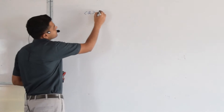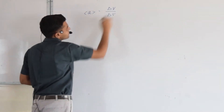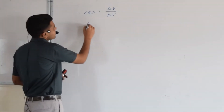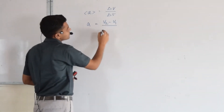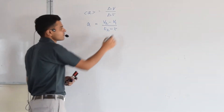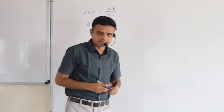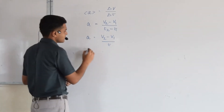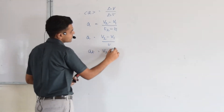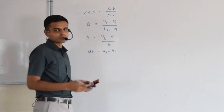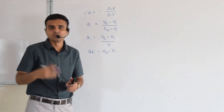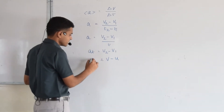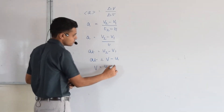Average acceleration equals delta V upon delta T, where delta V is the change in velocity and delta T is change in time. So we can write A equals V2 minus V1 over T2 minus T1. If the time interval is T, then A equals (V2 minus V1) over T, giving us AT equals V2 minus V1. Using V for final speed and U for initial speed, this becomes V equals U plus AT.